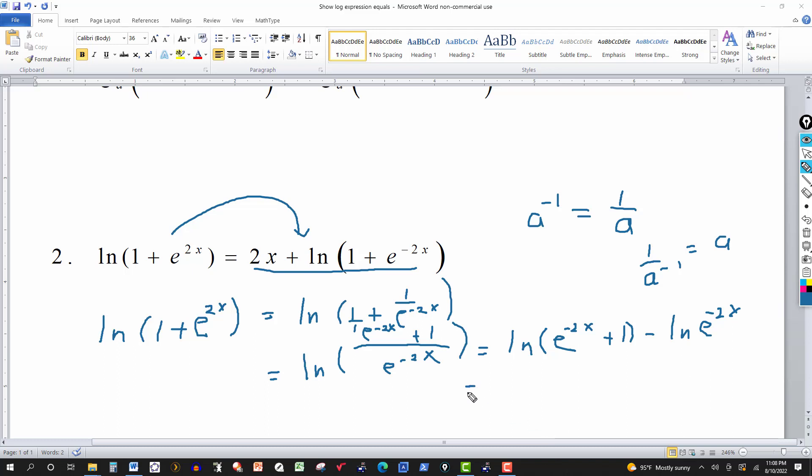And then I'll just say, this is equal to. So when I wind up with this right here I'd say this is ln and I can rewrite this. Addition is commutative so I can write it instead of e to minus 2x plus 1 I can write it as 1 plus e to the negative 2x.